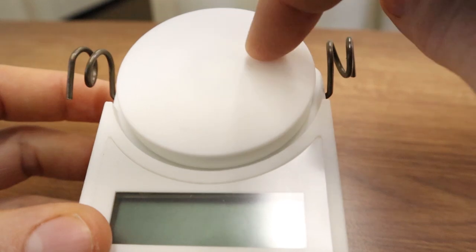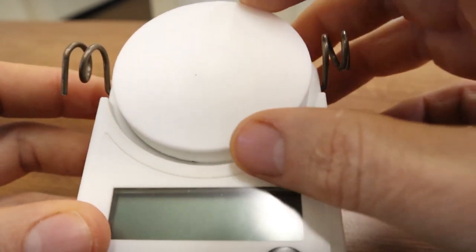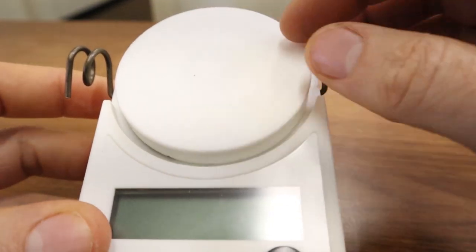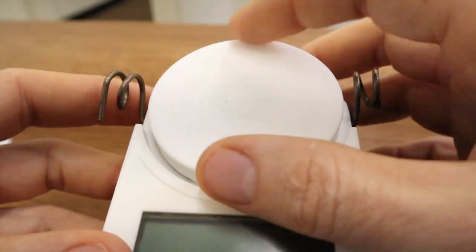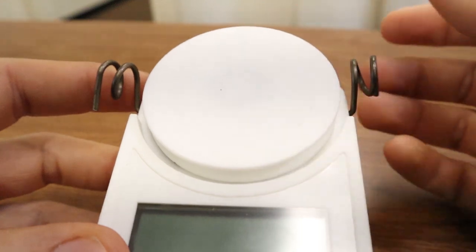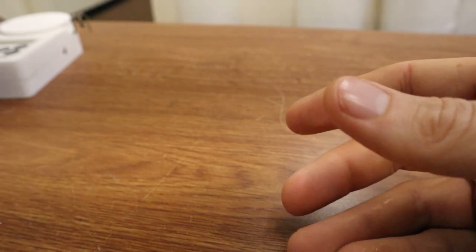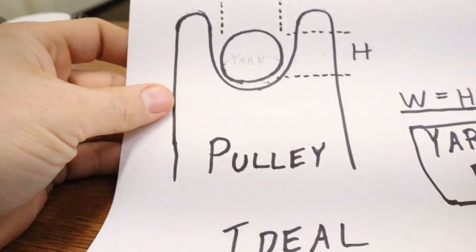As the yarn goes around this pulley, it counts the number of times the pulley goes around, and then by using the size of the pulley, it can calculate the length of the yarn. That's how all yarn counters work, and now I'm gonna start talking about the actual problem.